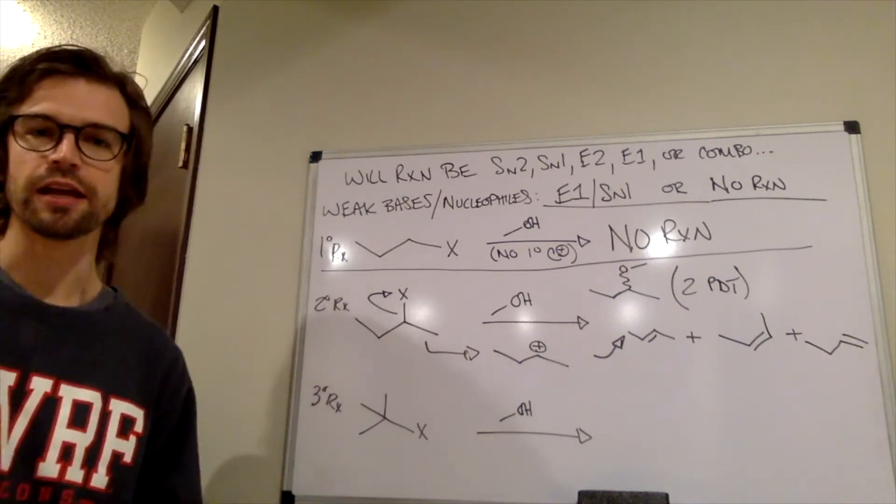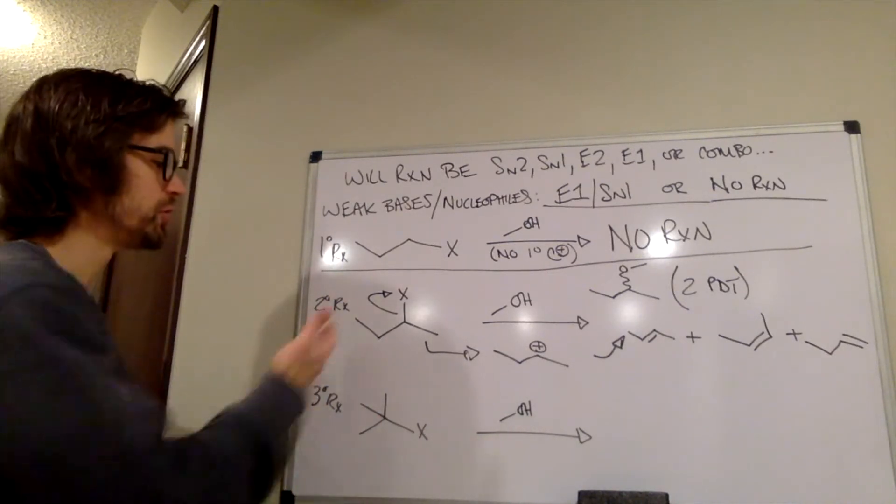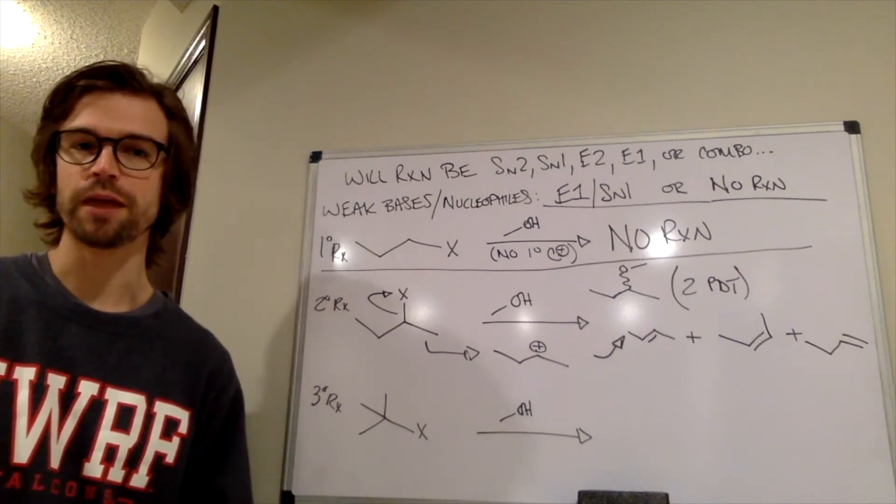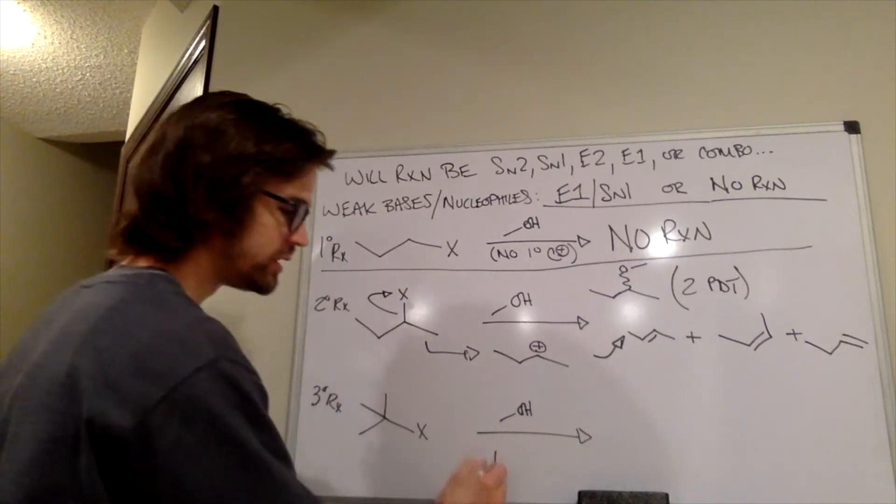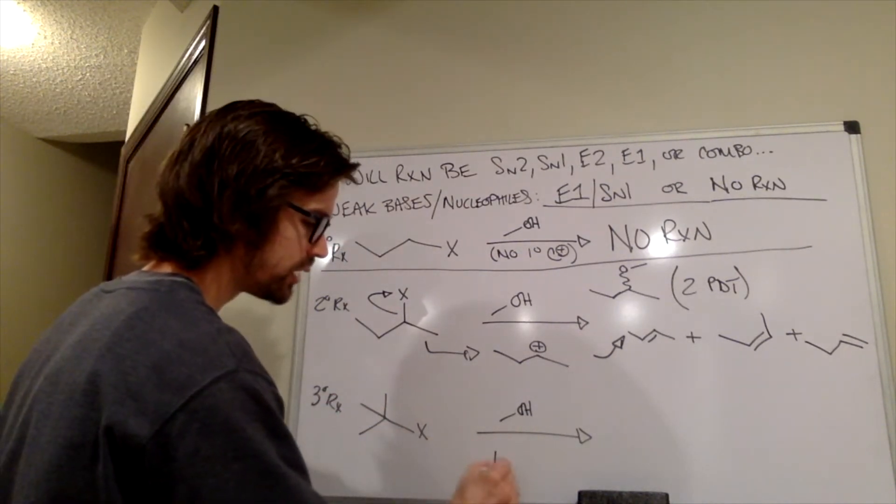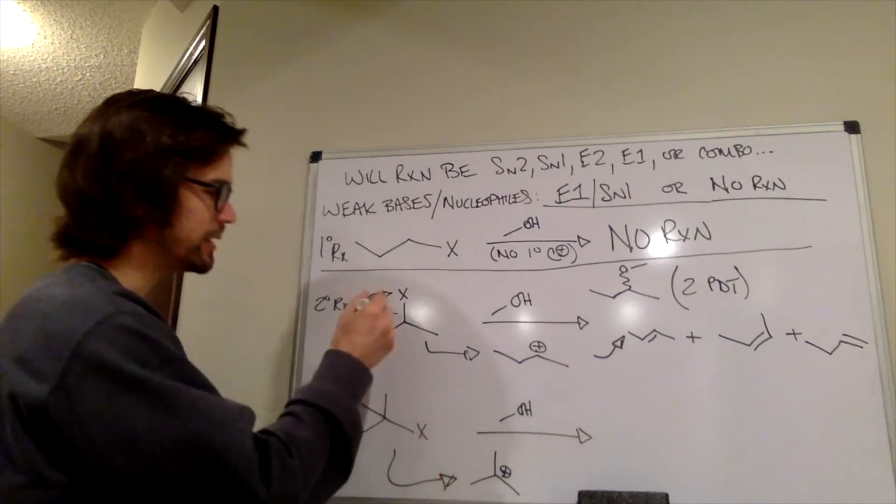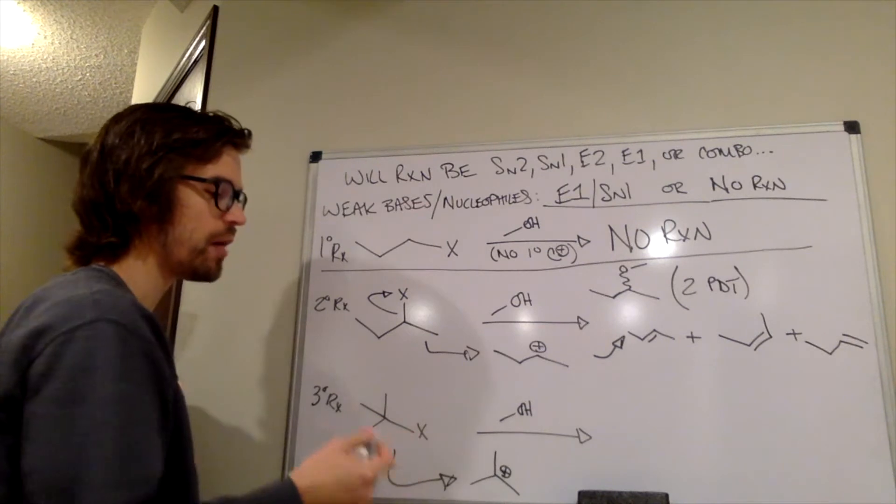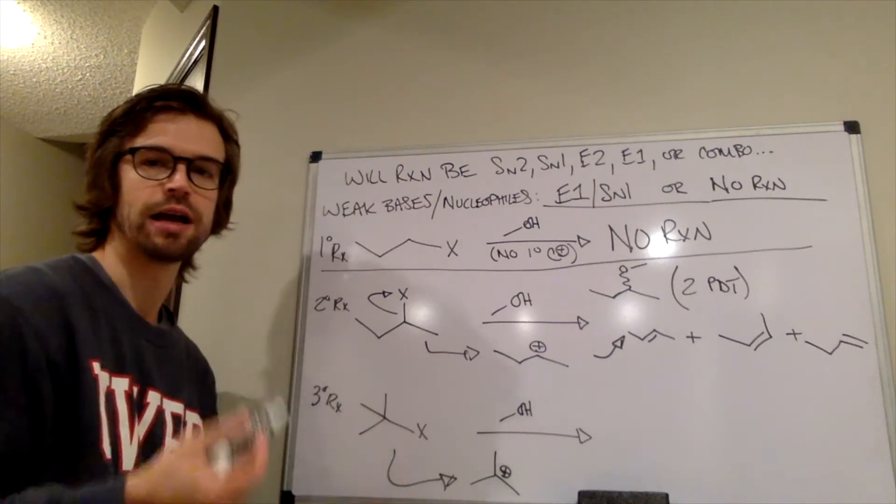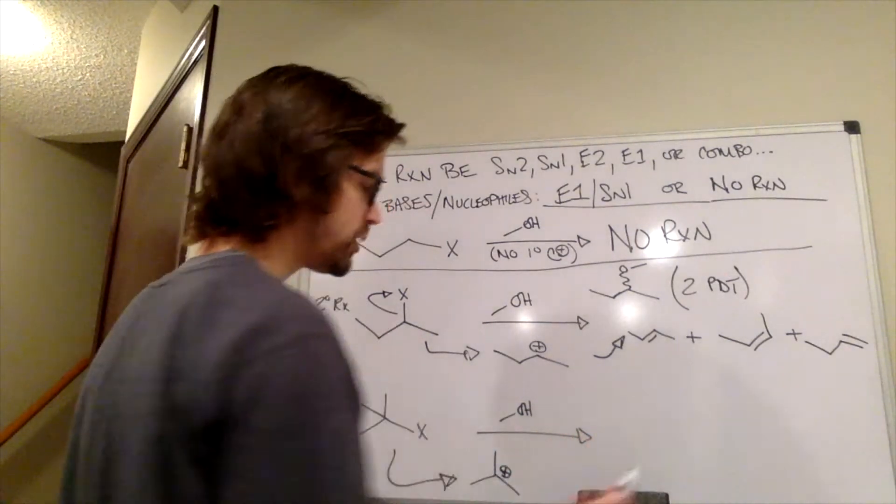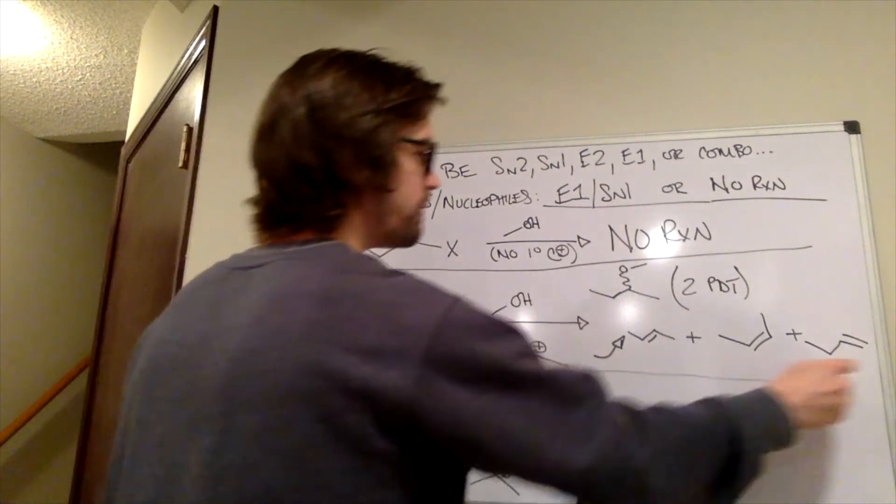What about our tertiary alkyl halide here? Same situation as the secondary. It's going to be able to form that carbocation. It's the most stable type of carbocation and tertiary carbocation. So it's actually going to be a faster reaction than we saw above here. And then we're going to get a mixture of SN1 and E1. And this one's going to be a little bit better, right? This one we have five products. This one we're only going to have two products, right?